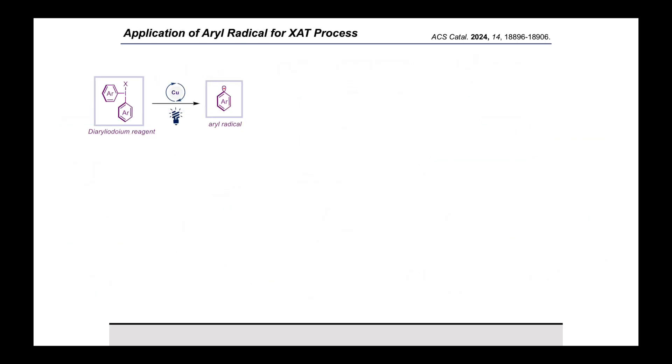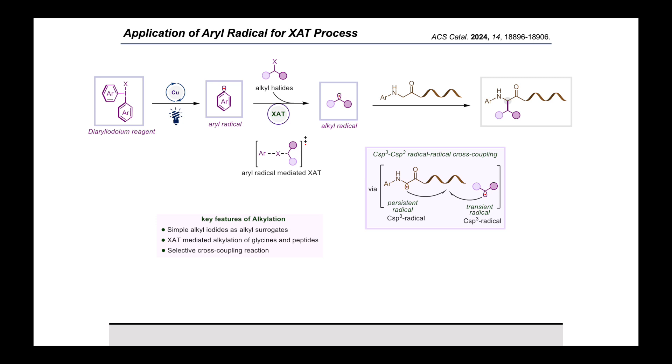After establishing the site-selective arylation process, then we thought, can we apply the generated aryl radical for further modification? To apply the aryl radical generated from diaryl iodonium reagent, after generating aryl radical in the copper photoredox condition, the aryl radical can undergo halogen atom transfer with alkyl iodides by generating alkyl radical via aryl radical mediated JART process. After generating the alkyl radical, it can undergo radical-radical cross-coupling with the alpha-carbon radical from glycine or peptide derivatives, forming Csp3-Csp3-coupled product. Various alkyl iodides were used as the alkyl source.